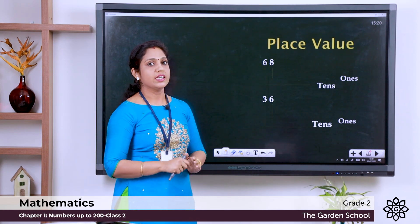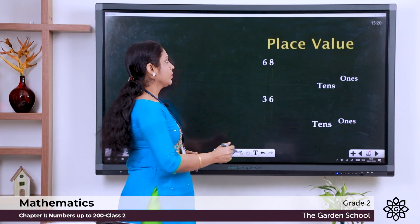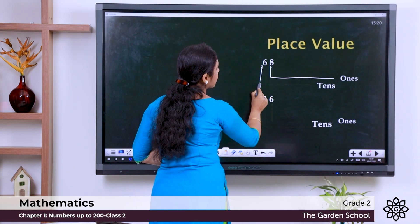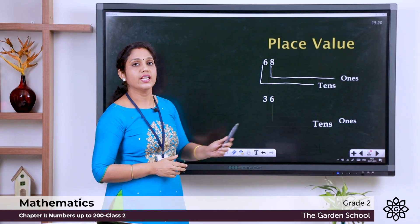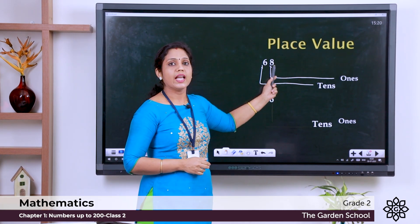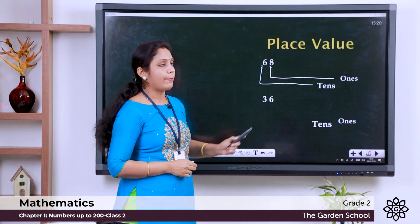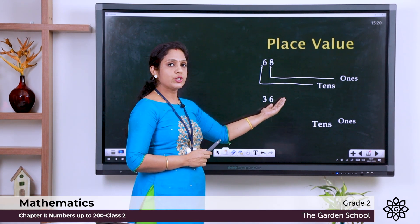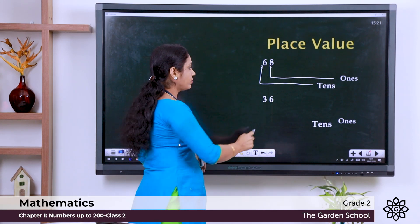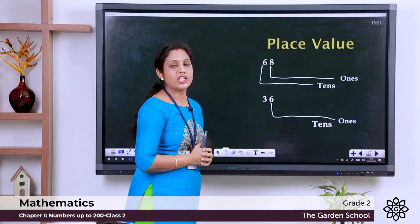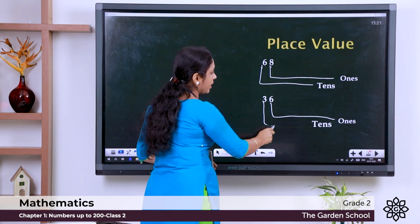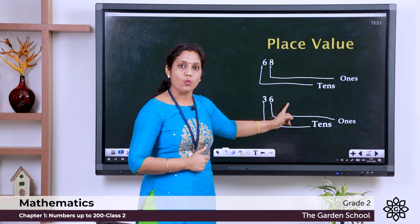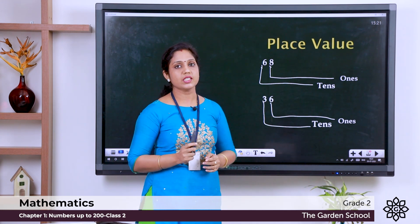The number 68 is a two-digit number: 8 ones and 6 tens. The place value of 6 is in the tens position, and 6 tens makes 60. Next example, 36: it is again a two-digit number. Counting from the right side — 6 comes in the ones position and 3 comes in the tens position. So the place value of 6 is 6, and the place value of 3 is 30.